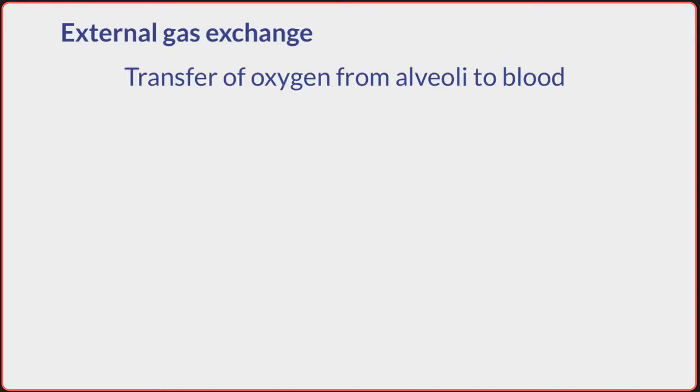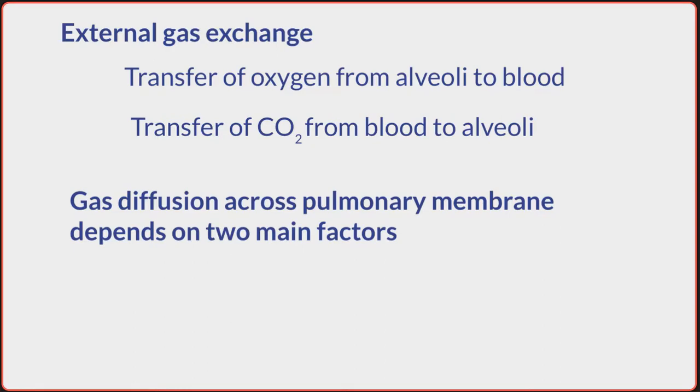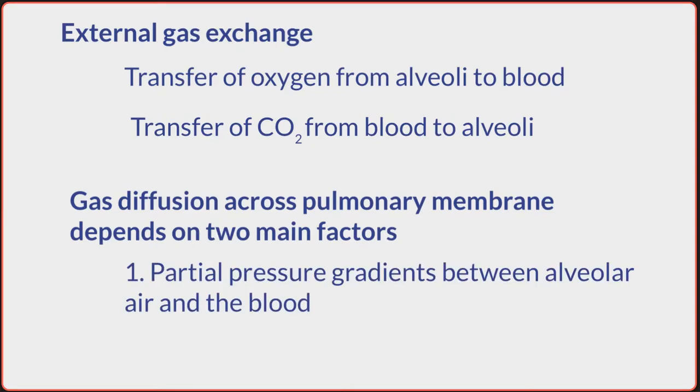External gas exchange is the transfer of oxygen from alveoli to blood and the transfer of carbon dioxide from blood to the alveoli. This occurs entirely by diffusion. Gas diffusion across the pulmonary membrane depends on two main factors: one, the partial pressure gradients between alveolar air and the blood, and two, the health of the lung tissue.